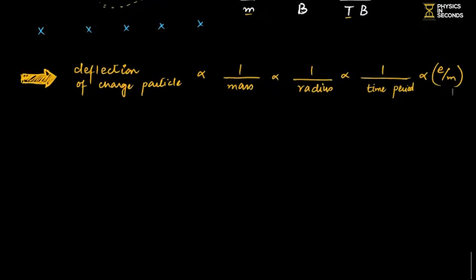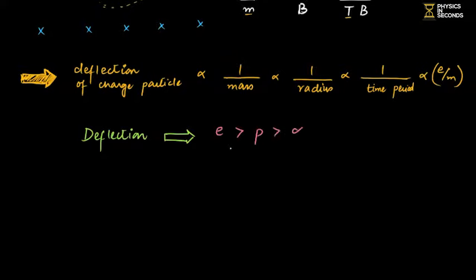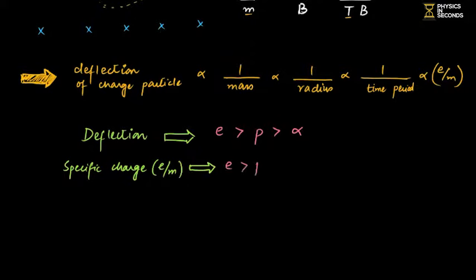Comparing electron, proton, and alpha particle: the decreasing order of deflection is electron > proton > alpha particle — electron has the most deflection, then proton, then alpha particle the least. The descending order of Specific Charge (Charge to Mass Ratio) follows the same order as deflection.